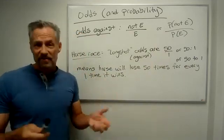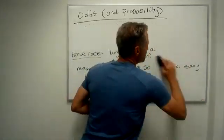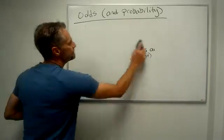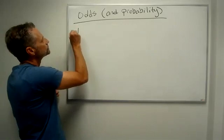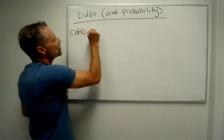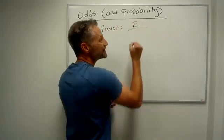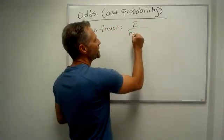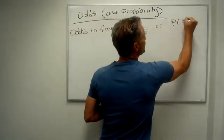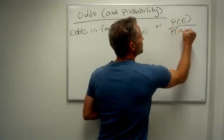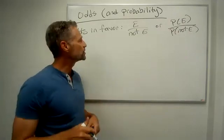Odds in favor are very similar. Odds in favor are the number of ways that E can happen over the number of ways that it can fail to happen, or probability of E over probability of not E. So just the opposite or the reciprocal of what we just did.